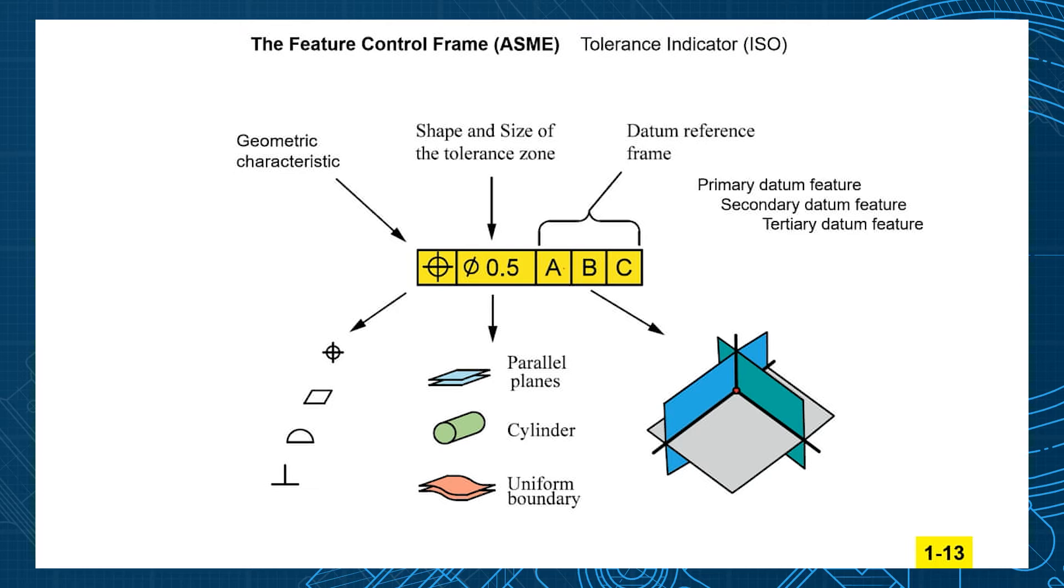Then you have your datum reference frame. You have your primary datum feature, the secondary datum feature, and the tertiary datum feature. Don't ask me why they didn't just say first, second, third, but they use primary, secondary, and tertiary. I guess that sounds more impressive. That's creating your coordinate system - like XYZ for positioning. Relative to what? Relative to this ABC XYZ coordinate system.